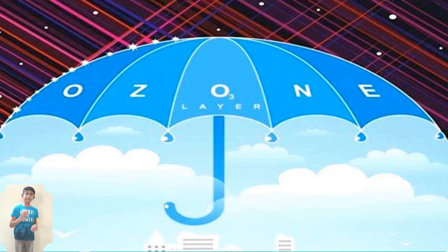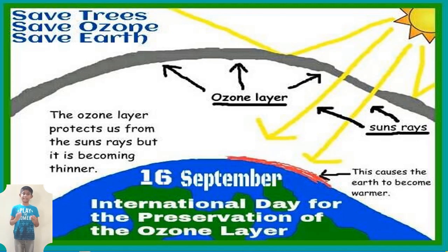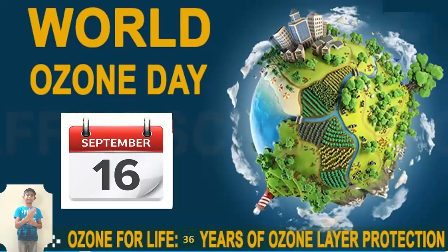Do you know why International Ozone Day is celebrated? In 1994, the United Nations General Assembly proclaimed the 16th of September as the International Day for the Preservation of the Ozone Layer, commemorating the date of the signing in 1987 of the Montreal Protocol on substances that deplete the ozone layer. This year we celebrate 36 years of global ozone layer protection.